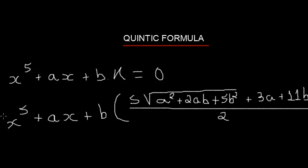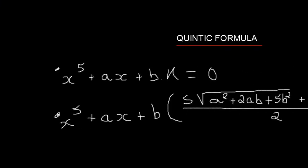But the difference between this equation and the other is that in the first form we will define a root K to use with X to solve the equation by radicals. But in the second equation, we will use only the A and B coefficients to solve this equation by radicals. Let's see an example.